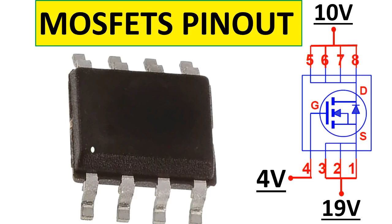In this video we're going to see the MOSFET pinouts. As you can see, we have a MOSFET with eight pins. This is an eight-pin MOSFET. There is always a dot on the package — the dot marks pin number one.